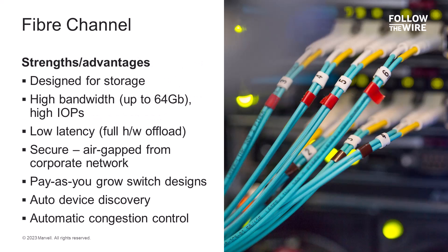Fiber Channel does have lots of advantages for storage connectivity. First and foremost, Fiber Channel was designed for only one thing: connecting servers to shared storage disk arrays, delivering the best combination of performance, scalability, security, and reliability. Fiber Channel delivers high performance with bandwidth available today up to 64 gigabits per second, and 128 gigabit per second Fiber Channel is on the roadmap. Fiber Channel networks also deliver millions of IOPS, or input-output processes per second. Fiber Channel delivers low latency by design — adapters utilize hardware offload and direct memory access, which reduces the latency for IO operations and reduces host CPU utilization at the same time. Standard Ethernet requires software initiators for both iSCSI and NVMe over TCP, and these initiators consume CPU and memory resources in the host that are not required when using Fiber Channel.